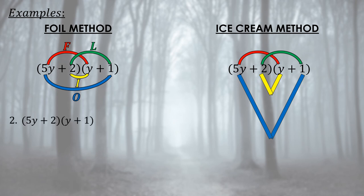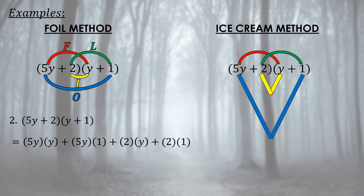Another example: (5y + 2)(y + 1). We have two binomials. Using the FOIL method: F = 5y times y; O = 5y times positive 1; I = positive 2 times y; L = positive 2 times positive 1.